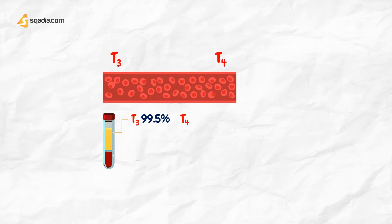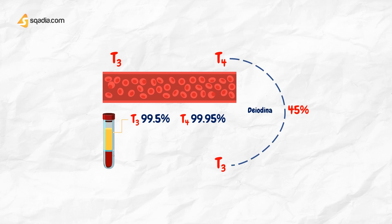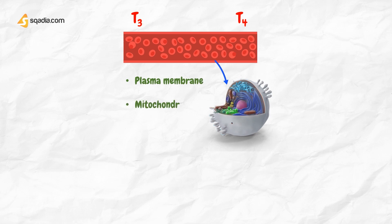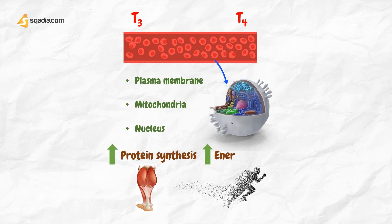Triiodothyronine and thyroxine enter the circulation, where they are transported largely bound to plasma proteins — 99.5% and 99.95%, respectively. About 4–5% of T4 is deiodinated to inactive reverse T3 according to the demands of the tissues. T4 seems to be mainly a pro-hormone of T3. The mechanisms of action of the thyroid hormones are not fully understood, but are thought to involve high-affinity binding sites in the plasma membrane, mitochondria, and nucleus. These receptor-hormone interactions result in a variety of effects, including increased protein synthesis and an increase in energy metabolism.